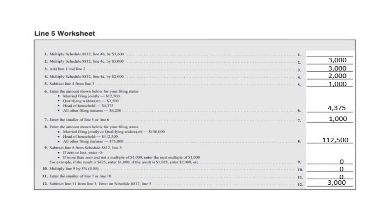On Line 4, multiply Line 4A from Schedule 8812 by $2,000, so $2,000 goes on Line 4. On Line 5, subtract Line 4 from Line 3 to arrive at $1,000. On Line 6, put $4,375 from the table to the left. On Line 7, enter the smaller of Line 5 or Line 6 to get $1,000. Line 8 will be $112,500 from the table to the left. Line 9 will be $0 as you subtract Line 8 from Schedule 8812 Line 3. Thus, Line 10 will be $0, and the smaller of Line 7 or Line 10 will be $0 on Line 11. On Line 12, subtract Line 11 from Line 3, which will be $3,000.